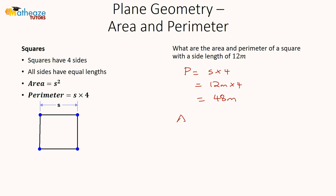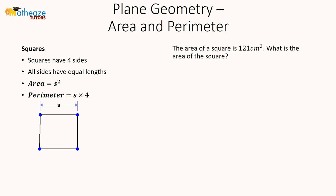The area is side squared, which is 12 meters squared, giving us 144 square meters.